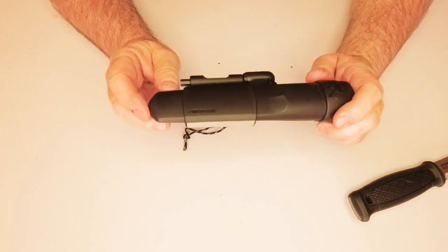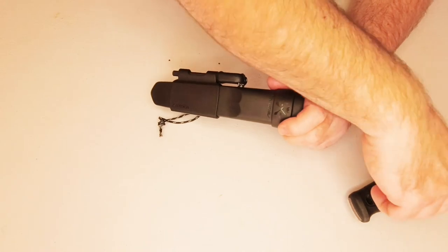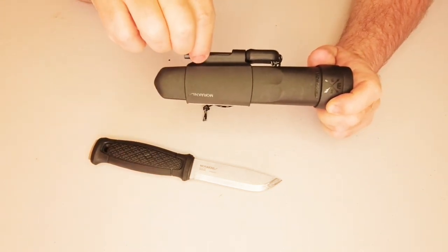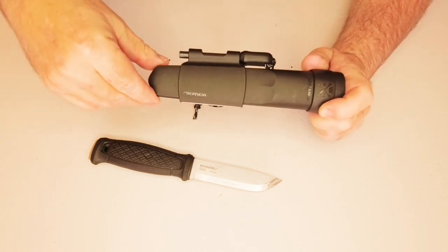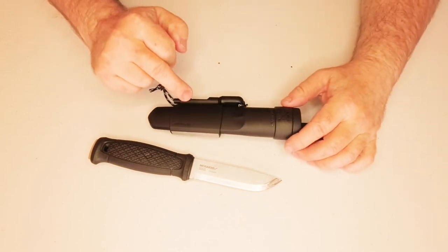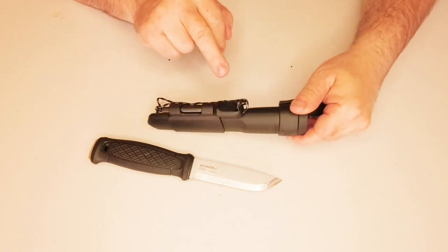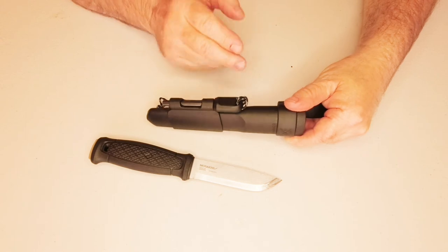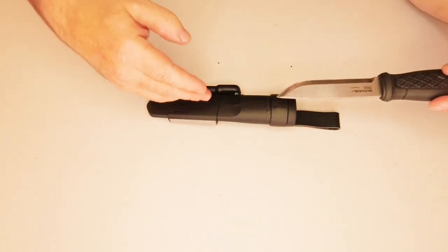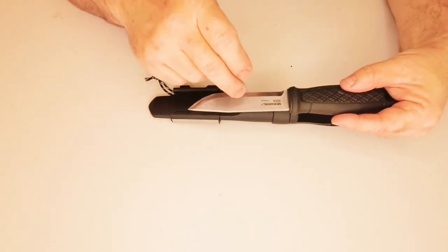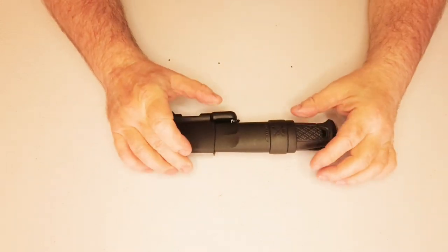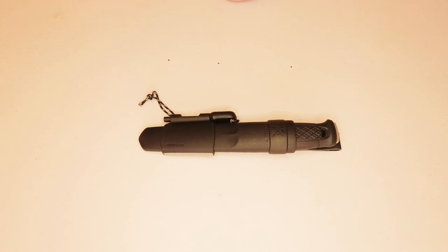So now that's the Morakniv Garberg with the survival kit. Now you can either buy this as just a knife with a polymer sheath or with a leather sheath. Or you can buy the survival kit as a standalone. So if you've already got the Morakniv, you can buy that and attach it straight to it. Or you can buy it as a kit, as you see here, which is the survival kit. Which has got the diamond sharpener on it, your fire steel or your ferro rod, and your Garberg. And if you've got the high carbon one, it'll still fit. It's exactly the same sheath, exactly the same shape knife, it's just different material.